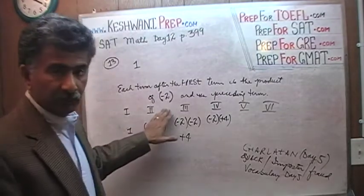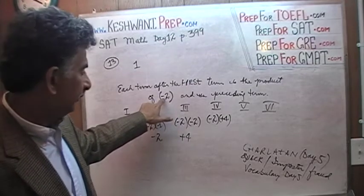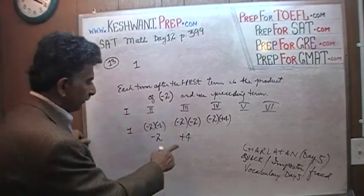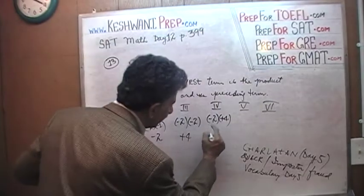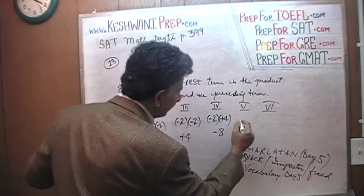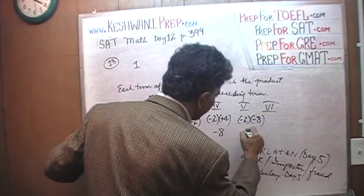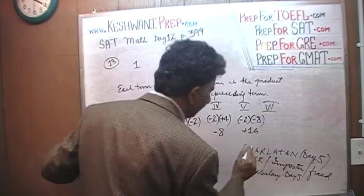It makes it very easy to notice by putting the parentheses around it that it is in fact negative so that we don't miss the negative sign. The preceding term was positive 4, so we have negative 2 times positive 4 which is negative 8. The fifth term is negative 2 times negative 8. Negative times negative is positive, 16.